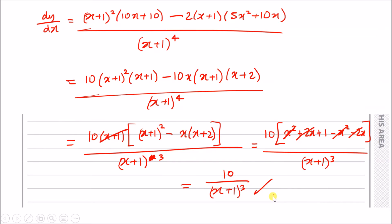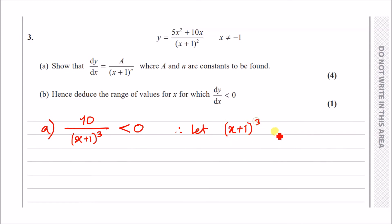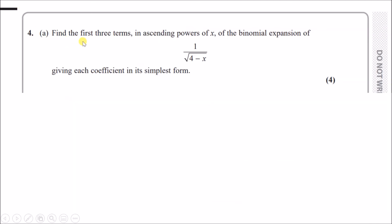Part (b): deduce the range of values of x for which dy/dx < 0. We have 10/(x+1)³ < 0. Since 10 is positive, the fraction is negative only when (x+1)³ < 0. Cube-rooting both sides gives x + 1 < 0, so x < -1. That's the complete answer.